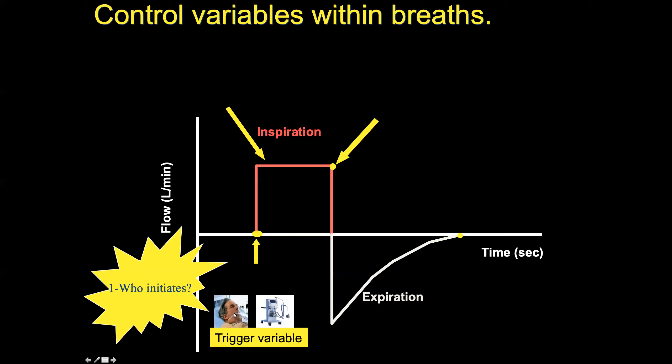With the patient, there are two ways initiation can occur — we call this the trigger variable. It is by a pressure trigger or a flow trigger. To summarize: initiation or starting of a breath can be controlled by only two players — the ventilator, which initiates by elapse of time, or the patient, who communicates by dropping pressure or drawing some flow. That is called a flow trigger or pressure trigger.